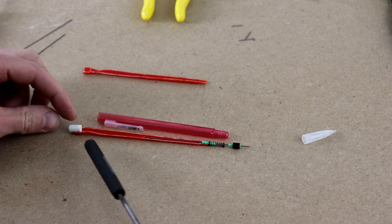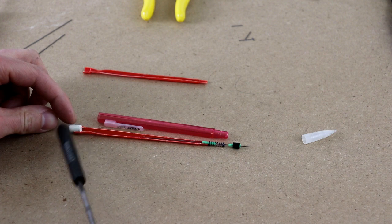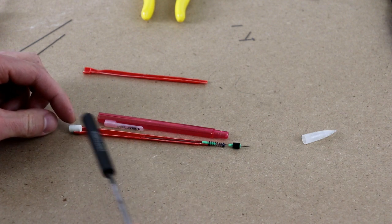So to recap how it all works, you pop your eraser off, put your lead in this inner barrel, pop your eraser back on.